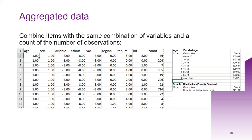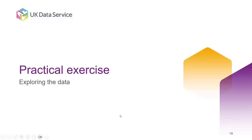For each combination of age, sex, disability, ethnicity, year of arrival, region, tenure, and household deprivation, there is a count of the number of people. The dataset you're going to get is slightly different to this, but we'll have a look in a minute.